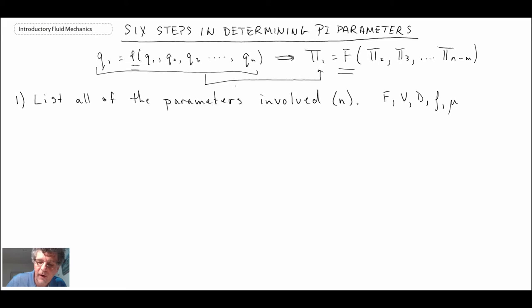Those are the main parameters involved, and in this case we would have one, two, three, four, five. So n would be five when we looked at the sphere.